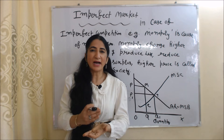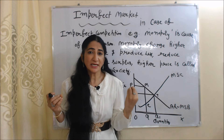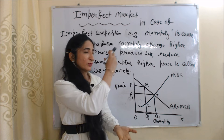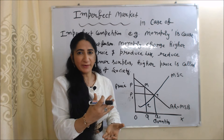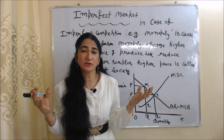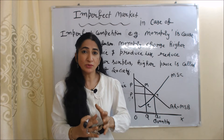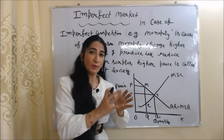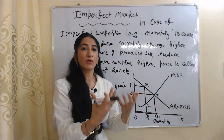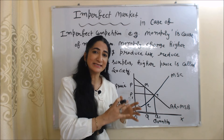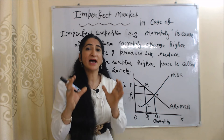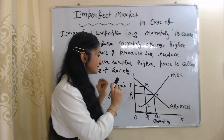The next cause of market failure is imperfect markets. In the case of imperfect competition, our markets fail. For example, monopoly — monopoly is an imperfect market and a cause of market failure. In order to maximize their profit, a monopoly produces less and charges a higher price. Higher prices reduce consumer surplus, and this higher price is a loss for society.